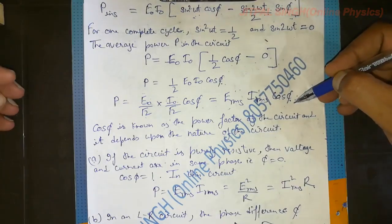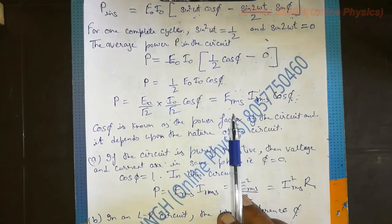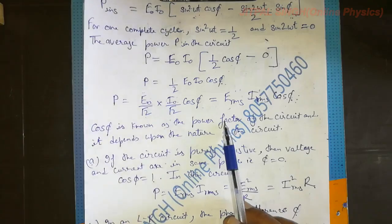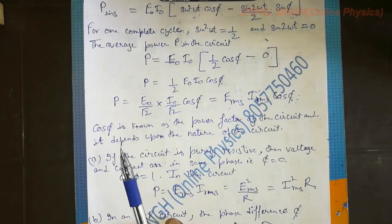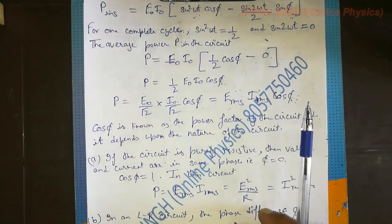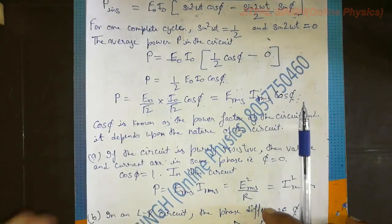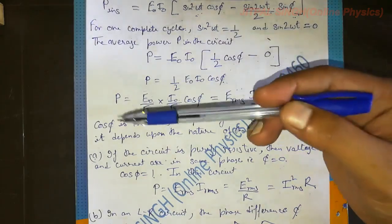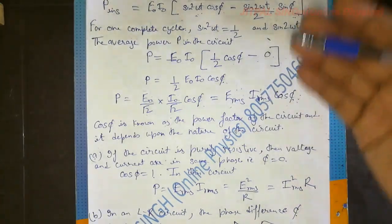What is cos φ called? Cos φ is known as the power factor. In an exam, if asked for the power factor of an AC circuit, just write cos φ. Do not write the entire formula E_rms · I_rms · cos φ — that is the formula for power. The power factor is cos φ, and it will have different values in different circuits.